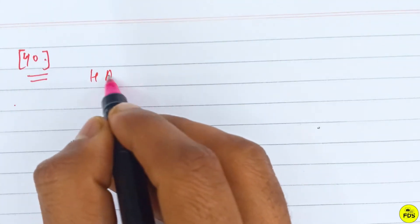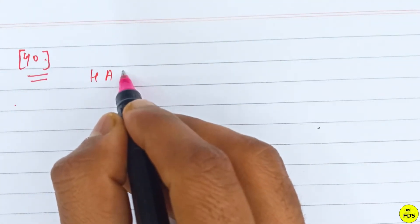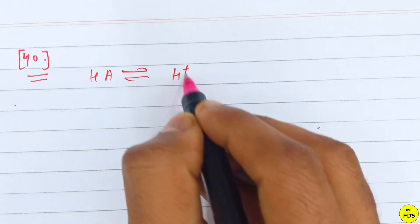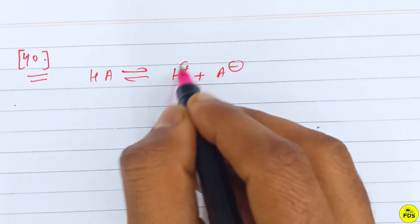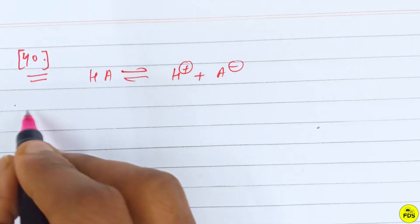Now, the equation is HA, a weak acid, which dissociates into H+ plus A-. At equilibrium...